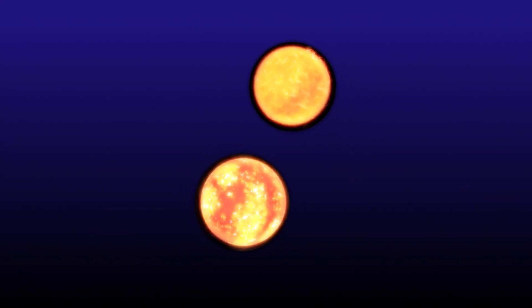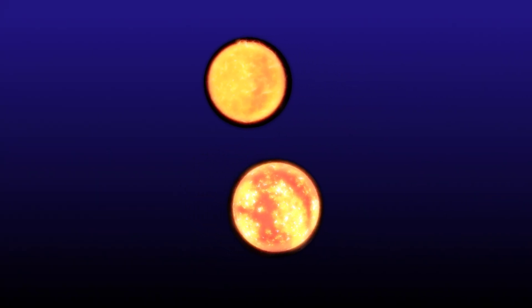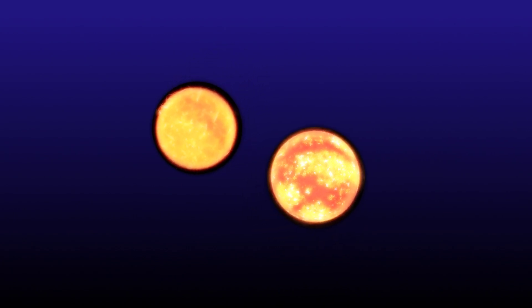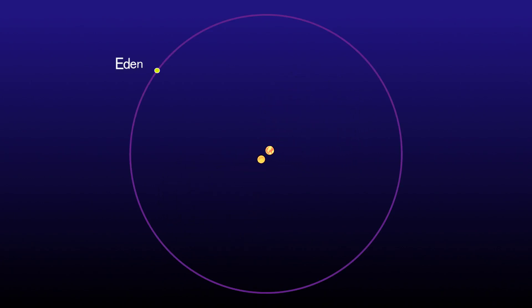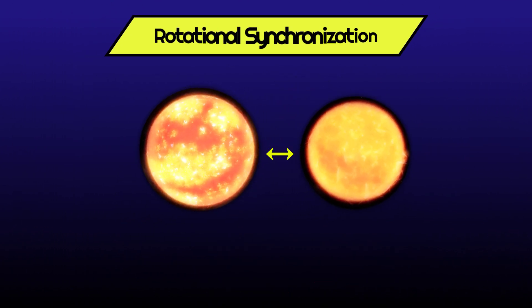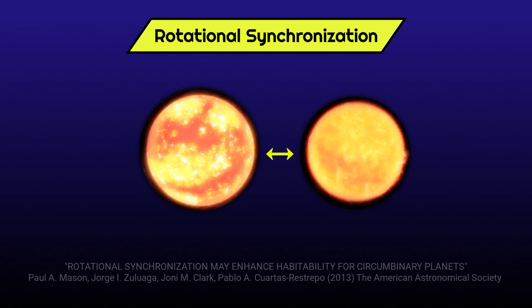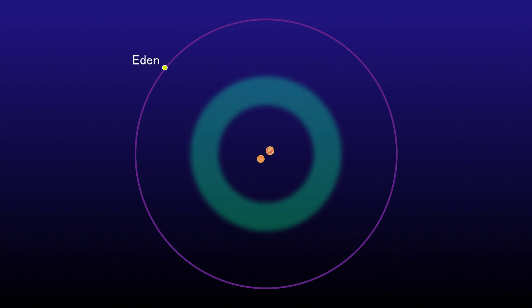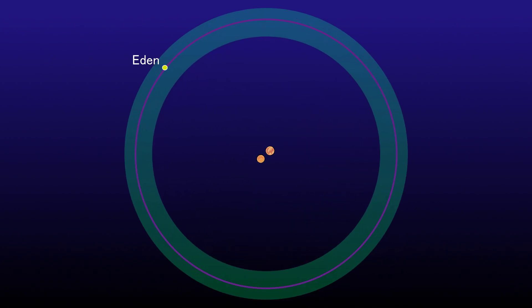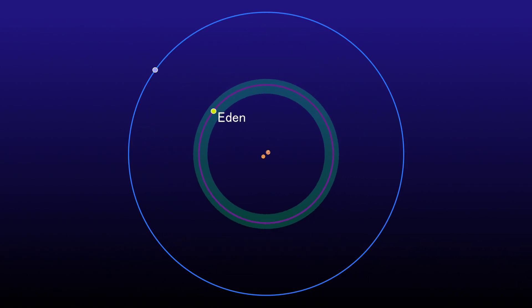However, in this case, these common problematic factors are actually mitigated by the fact that the two stars of this system orbit very close to each other, and Eden around them both. Due to rotational synchronization between the star couple, their instability is significantly tamed, leading to quieter systems. And the combined strength of both stars also shifts the habitable zone further out, which is reflected in Eden's orbital period of 206 days, roughly half Earth's, and slightly less than Venus.